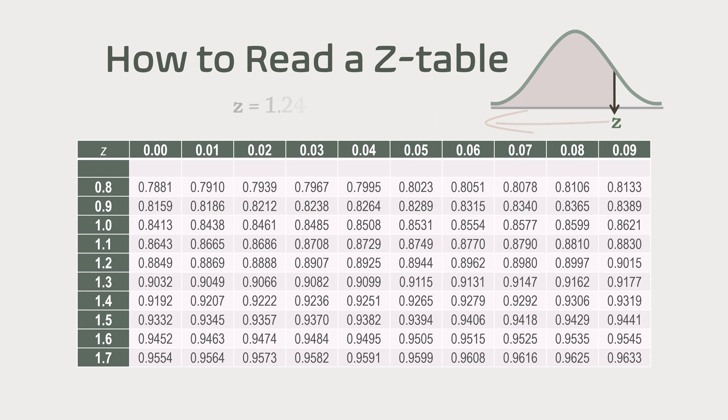Suppose your z-score is 1.24. Note that 1.24 equals 1.2 plus 0.04. In the positive z-score side of the table, go to the row labeled 1.2.